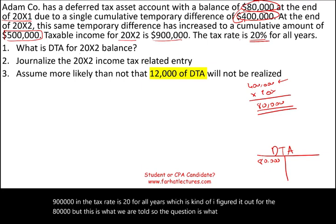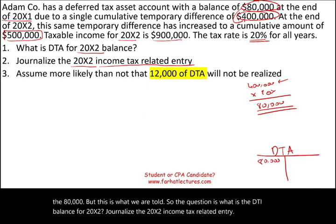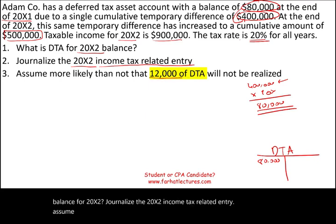The questions are: What is the DTA balance for 20x2? Journalize the 20x2 income tax-related entry. And assume more likely than not that 12% of the DTA will be unrealized.